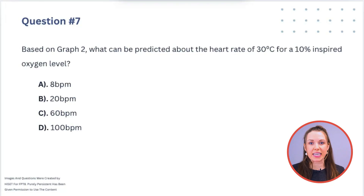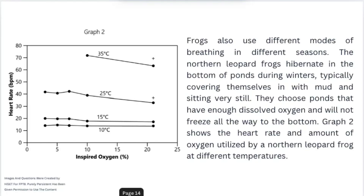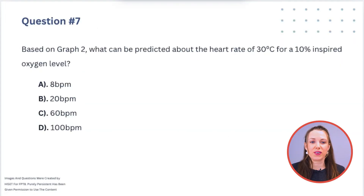Question 7: Based on Graph 2, what can be predicted about the heart rate at 30 degrees Celsius for a 10% inspired oxygen level? Looking at 10% inspired oxygen, we find that line on the graph. Then for 30 degrees Celsius — we have 25 degrees here and 35 degrees there — so we estimate right in the middle. Going across, it looks like we're right around 60 beats per minute.